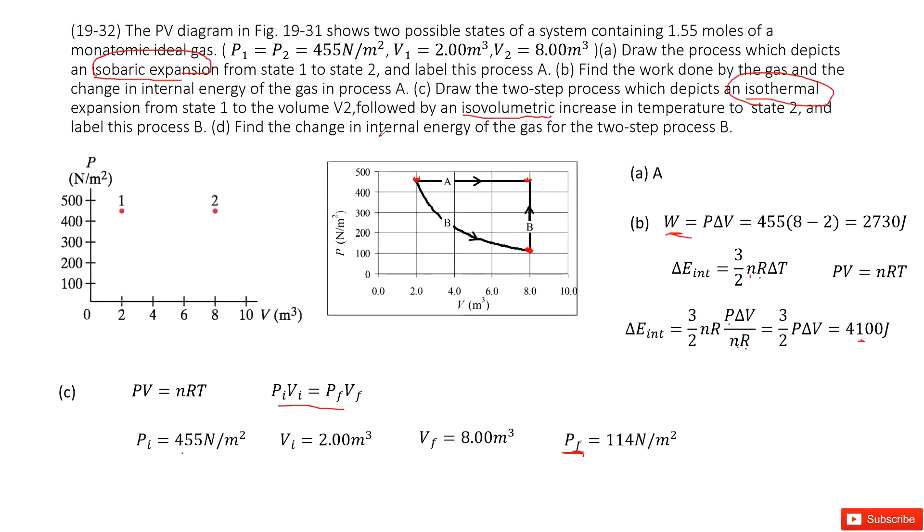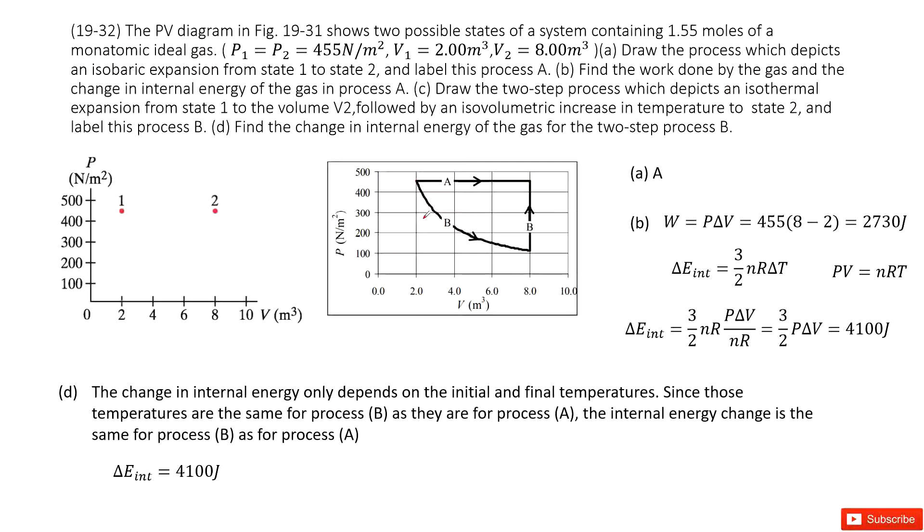Next one, find the change in internal energy of gas for the two steps of process B. So it looks like we need to find the internal energy for the B part. So we can see the total energy is conserved. And the internal energy changed for A process equal to the internal energy changed for B process. So directly, we can find internal energy change for the B is there. Thank you.